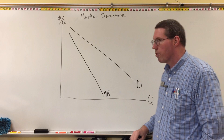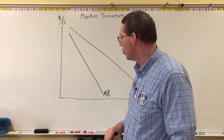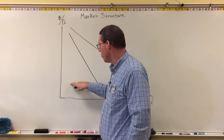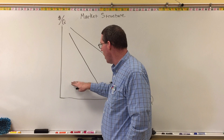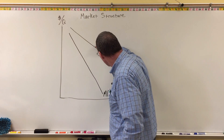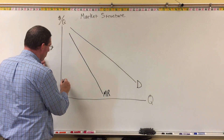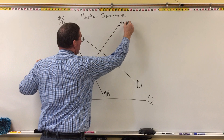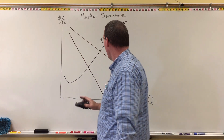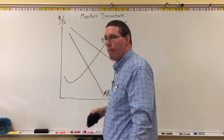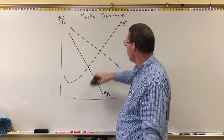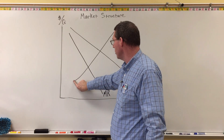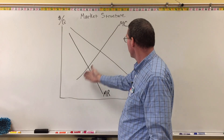The third curve we learned about was the marginal cost curve. It starts out decreasing a little bit because of economies of scale, then it reaches a minimum point and curves upward permanently. We only really care about the marginal cost curve on its upward sloping portion, so I'm erasing the downward sloping portion and drawing it as a straight line for ease of understanding.